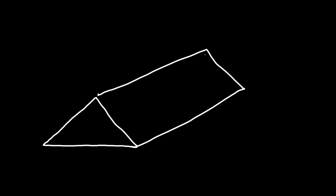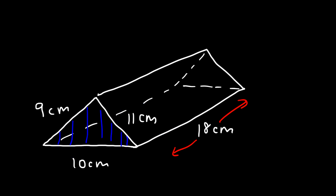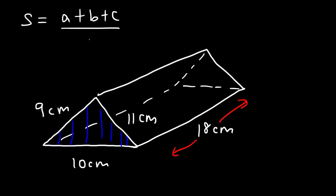Let's look at another example. This time we're given the values of all three sides of the triangle, and the height of the prism is 18 centimeters. Everything is in centimeters. Calculate the volume of the prism. To calculate the area of a triangle when only given all three sides and it's not a right triangle, we need to use Heron's formula. First you need to calculate s, which is half of the perimeter: it's a plus b plus c divided by 2.